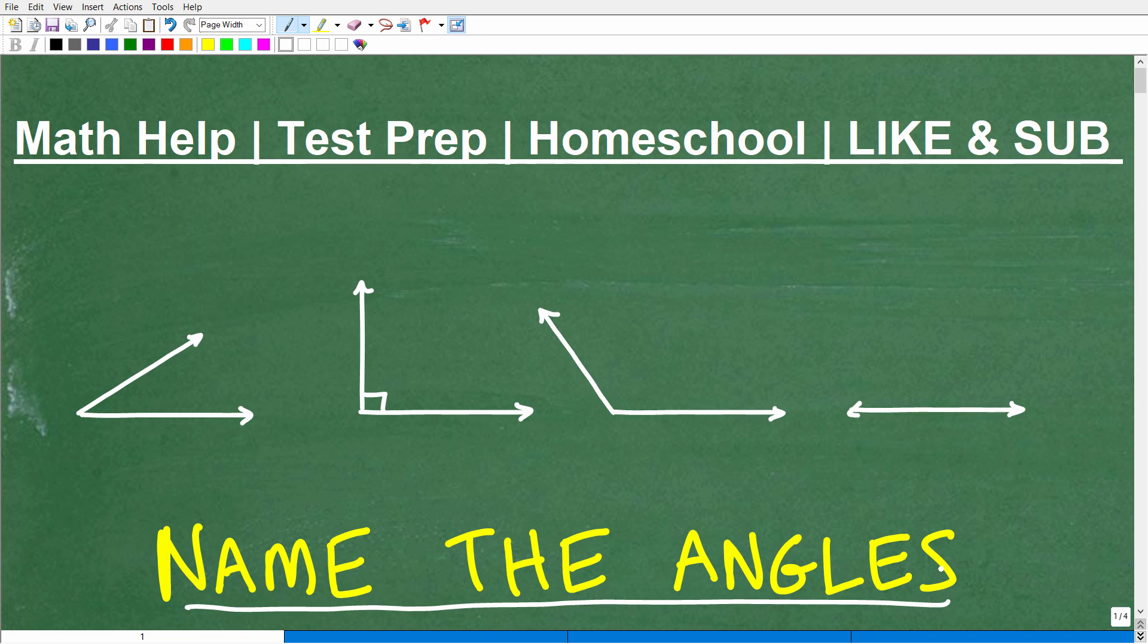Because angles in geometry have specific names or could be classified with specific names, and you need to know these names or classifications. So we're going to take a look at four different angles. If you think you know these names, go ahead and put your answers into the comments section. How would you classify this angle, this angle, this angle, and this angle?